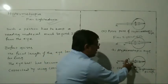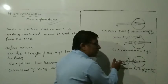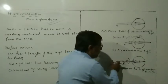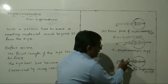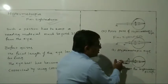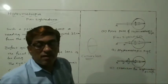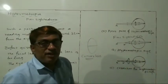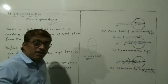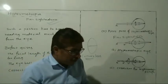By using the convex lens, the image falls on the retina. The brain thinks that the object is at a nearer position, and thus the image falls on the retina. In this way, farsightedness can be corrected by using the convex lens.